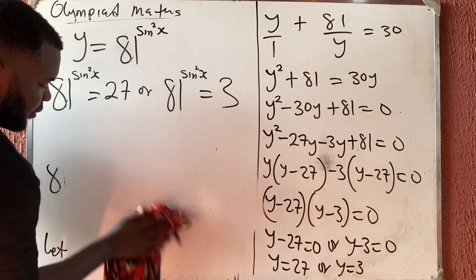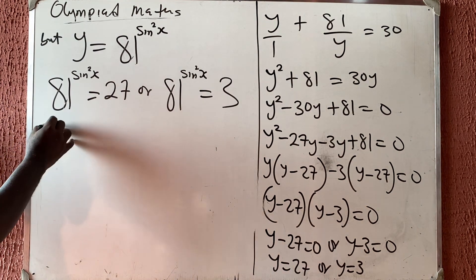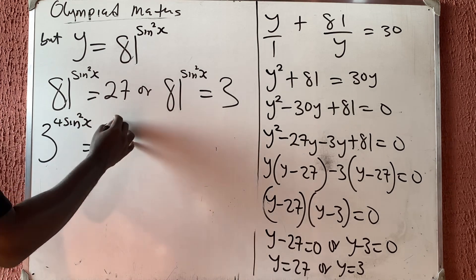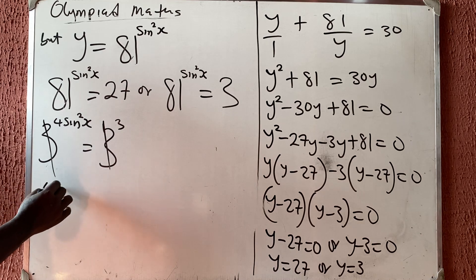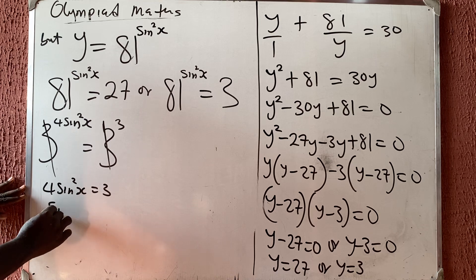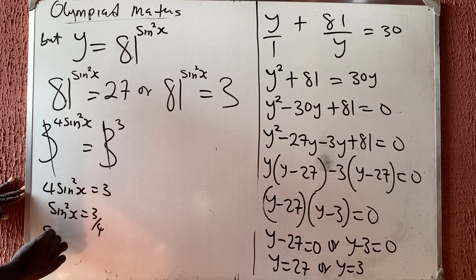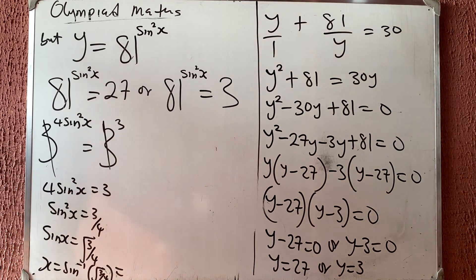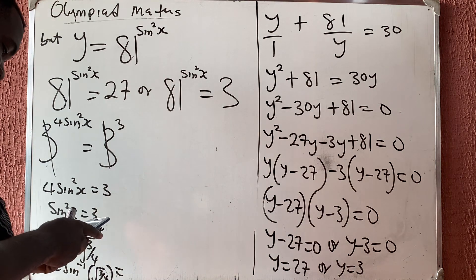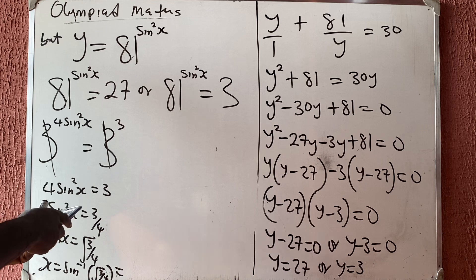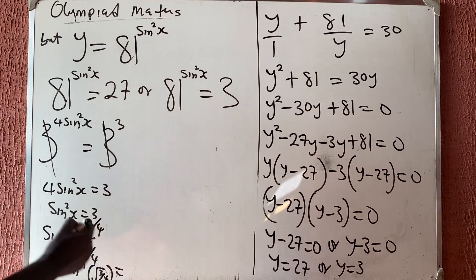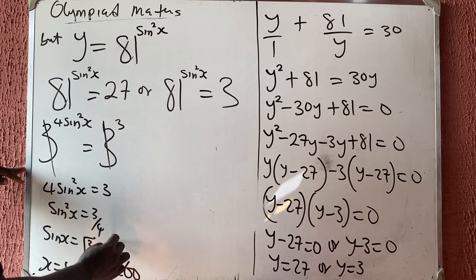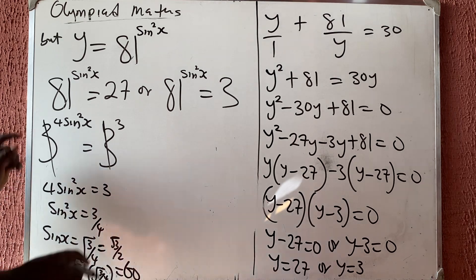Solving the first case: 81 equals 3 to the power 4, and 27 equals 3 to the power 3, so 3 raised to the power 4 sine squared x equals 3 raised to the power 3. Therefore 4 sine squared x equals 3, so sine squared x equals 3 over 4. Thus sine x equals the square root of 3 over 4, and x equals sine inverse of root 3 over 2, which gives x equals 60 degrees, since sine 60 equals root 3 over 2.